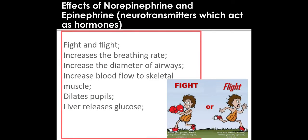Here are some of the fight or flight responses that you need to be aware of, taken directly from the mark scheme. We need to increase our breathing rate so that we have more oxygen available for aerobic respiration to make ATP for muscle contraction. We also need to increase the diameter of our airways so we get a higher volume of oxygen into our lungs for the same reason.